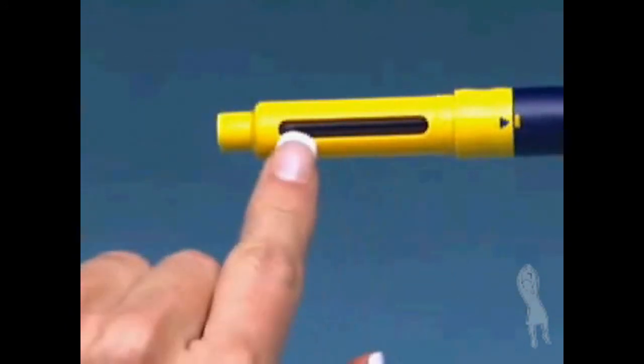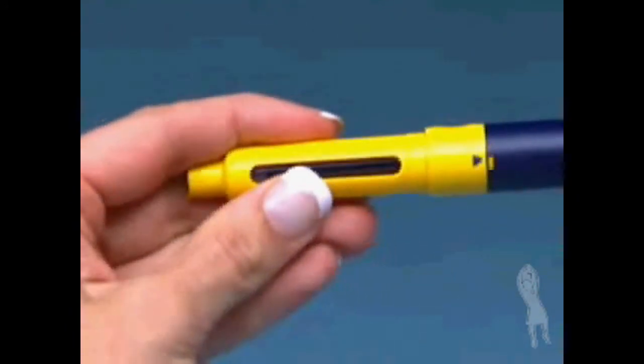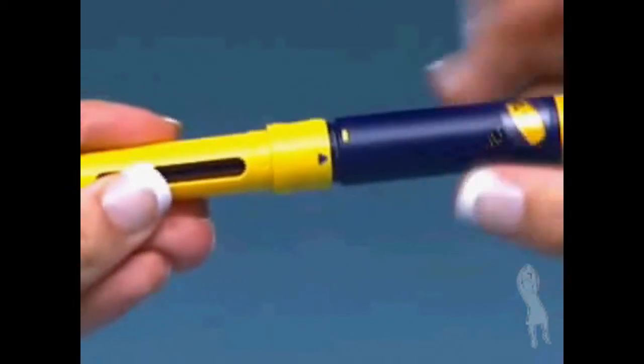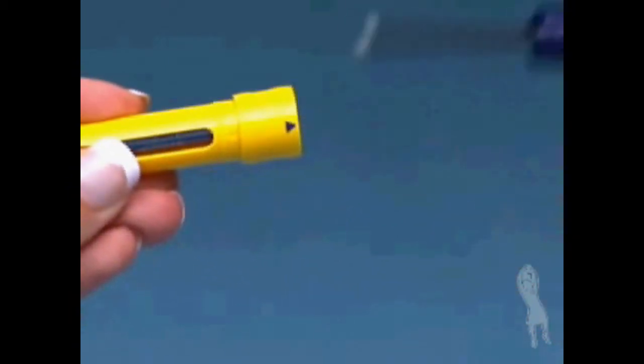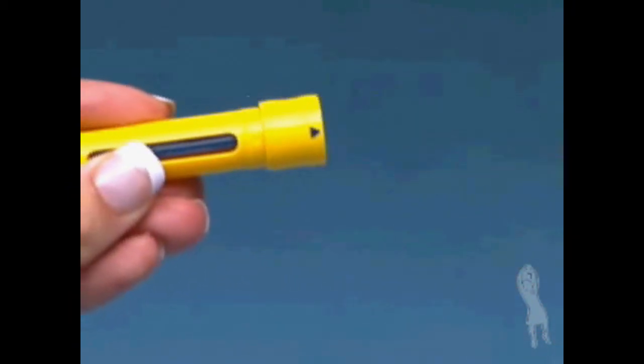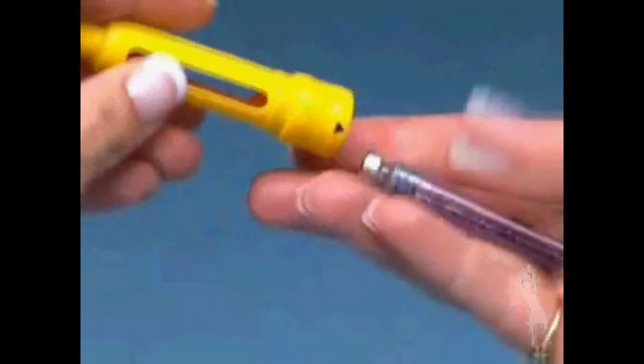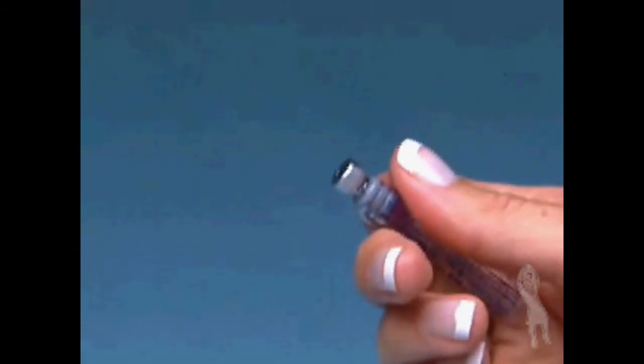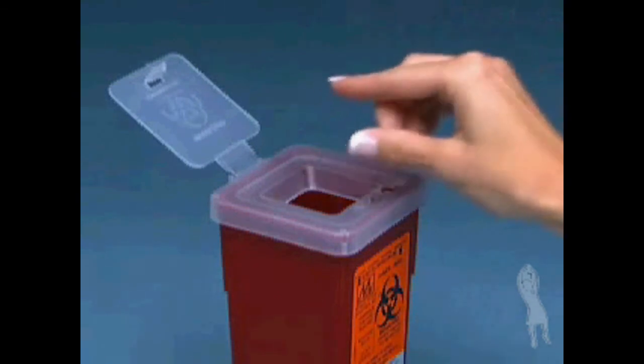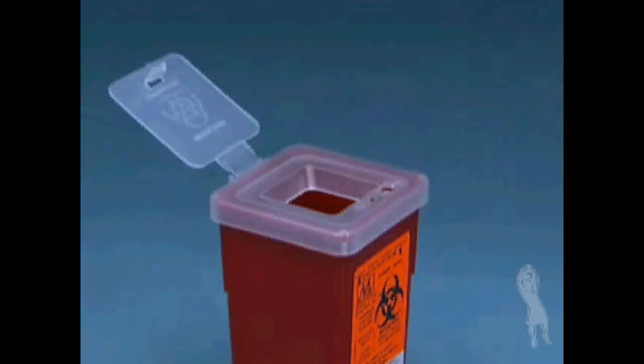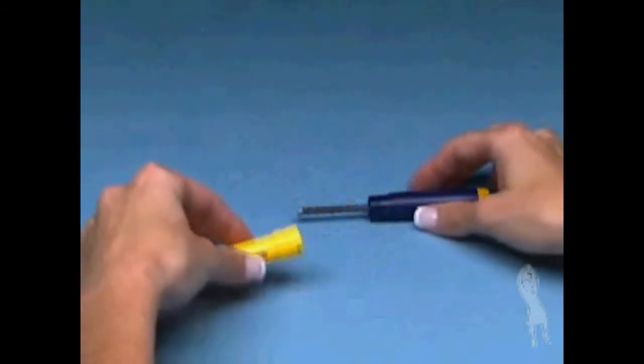If the Follistim AQ cartridge is empty, unscrew the pen body from the cartridge holder. Put the pen body down on a clean, dry surface and remove the empty Follistim AQ cartridge from the cartridge holder. Safely dispose of the empty Follistim AQ cartridge right away in the same safety container that you used for needle disposal.